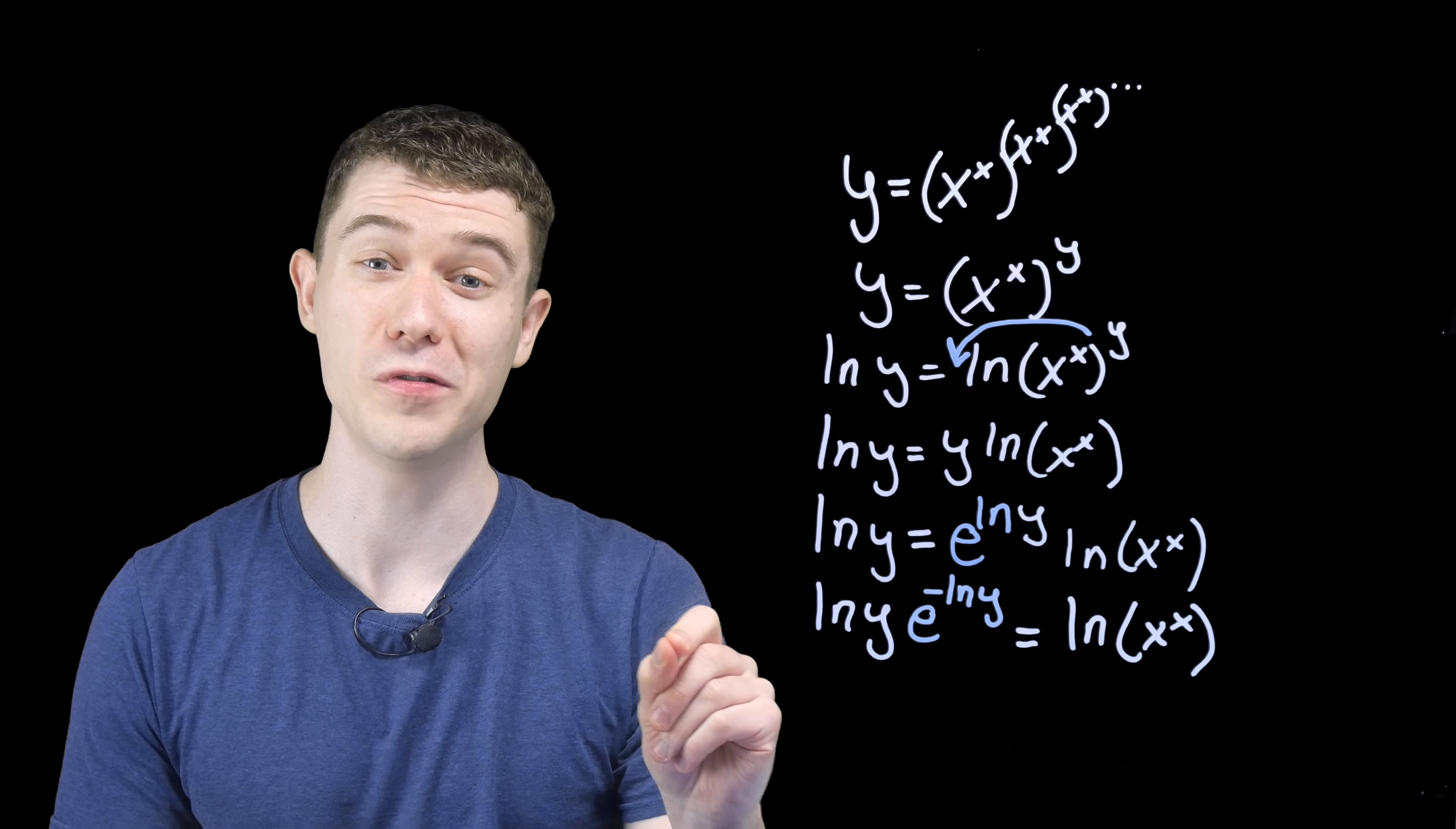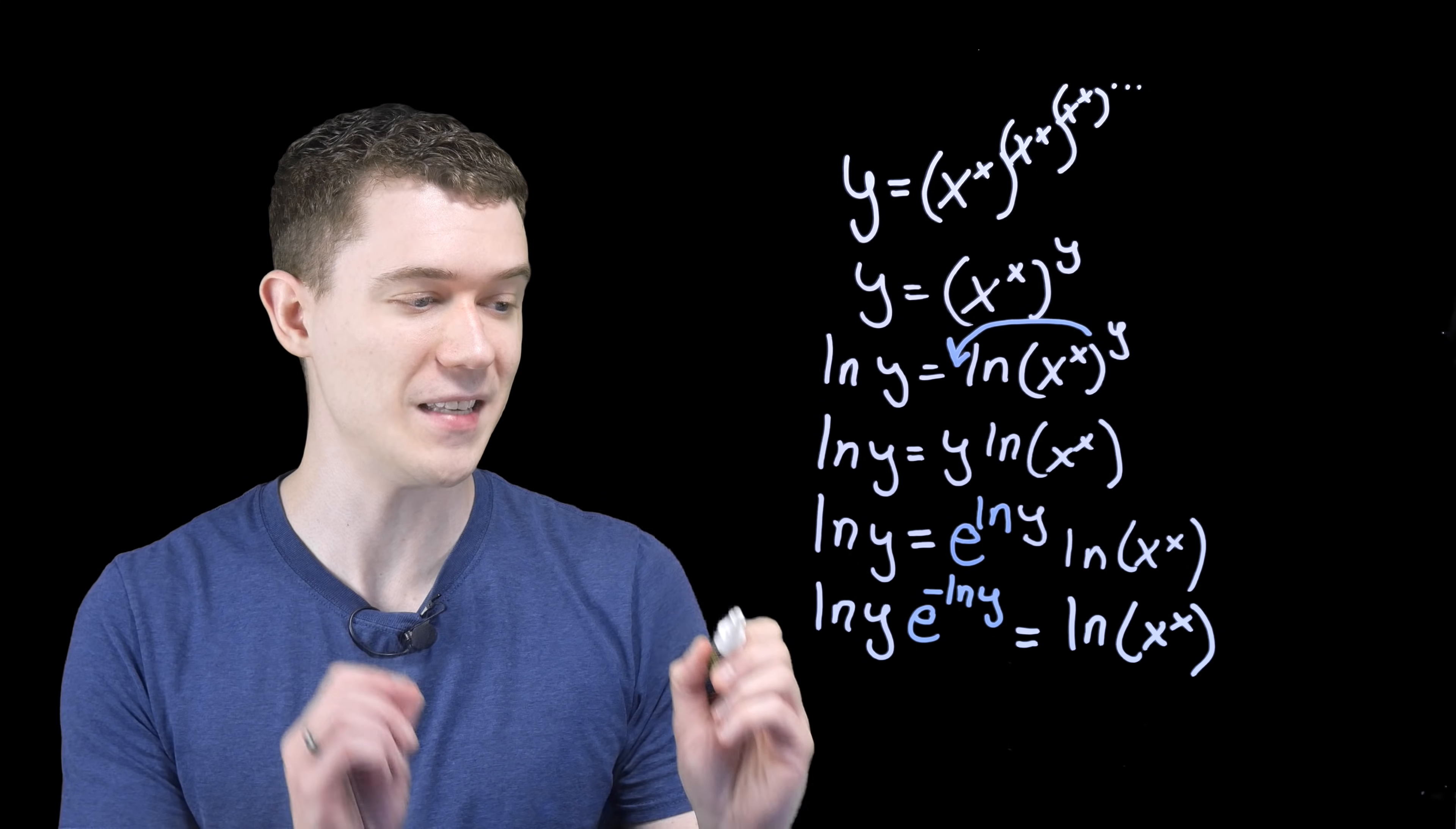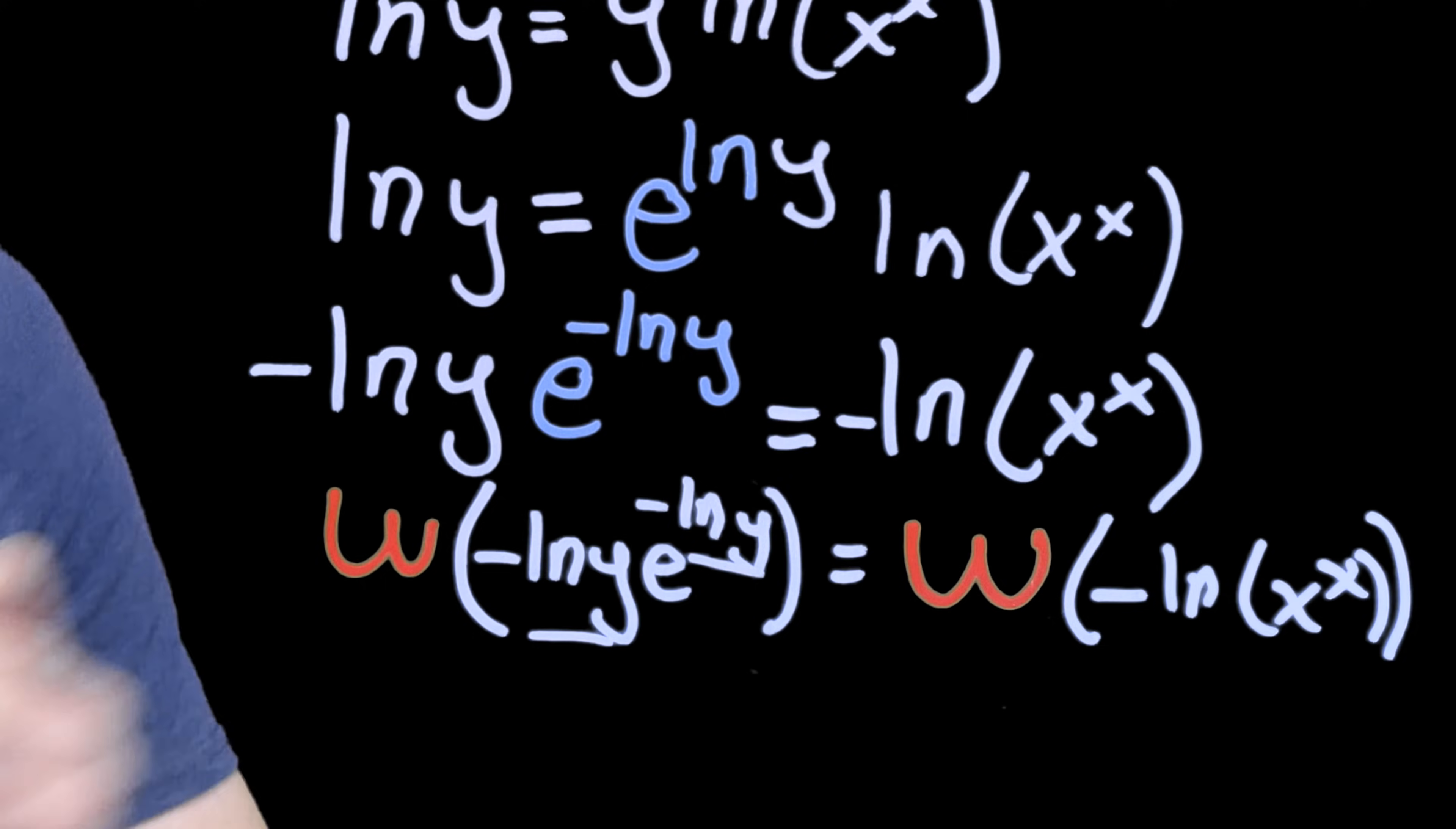And maybe you can see where we're going if you think back to that Lambert function. Remember that the Lambert function is the inverse function of x e to the x. So this is pretty close, isn't it? We have a natural log y e to the natural log y. So, let's make these exactly match up by taking the negative of both sides here. Compose both sides with w, and we can finally take advantage of the property that w of x e to the x is simply x. Or really, x in this case is minus natural log y.